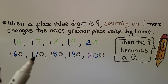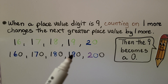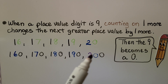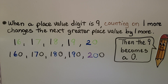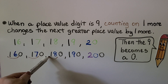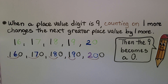160, 170, 180, 190 — we now have a 9 in the 10s place, so the next step gives us a 0 in the 10s place and one more 100. We can group the place values together and look at this as 16 tens, 17 tens, 18 tens, 19 tens, 20 tens.